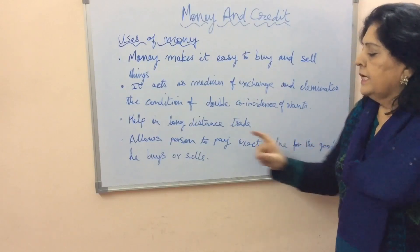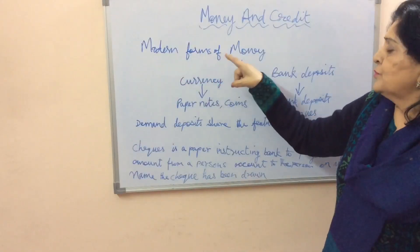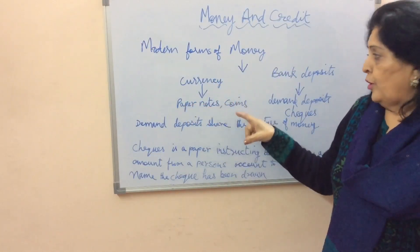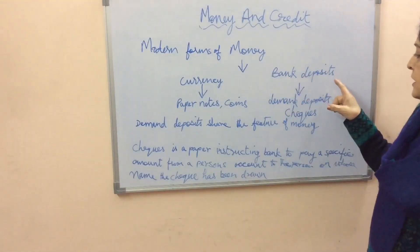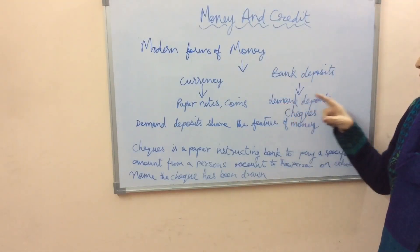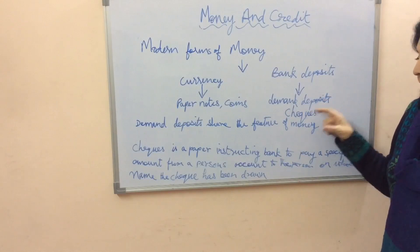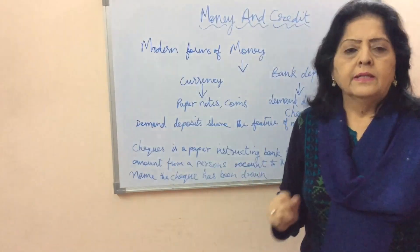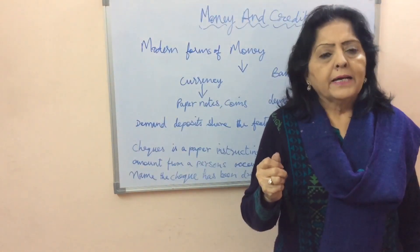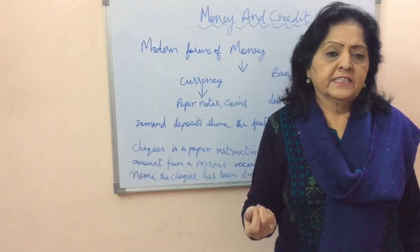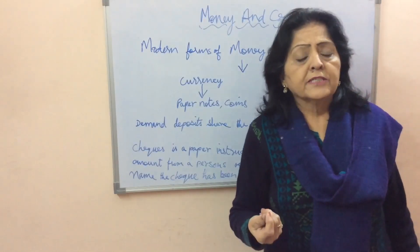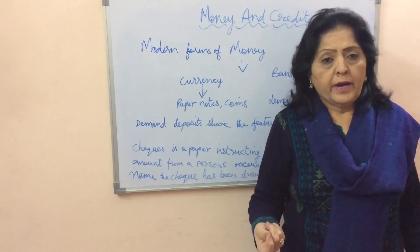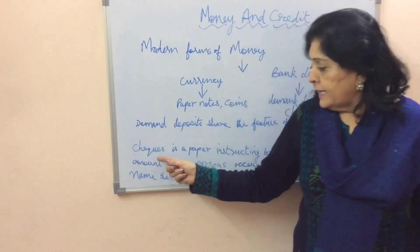Money helps in long-distance trade and allows a person to pay the exact value for the goods he buys or sells. Modern forms of money include currency — paper notes and coins — and bank deposits, which include demand deposits and checks. Demand deposits share the features of money and are widely accepted by people in transactions.